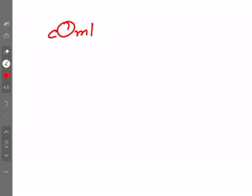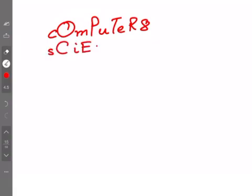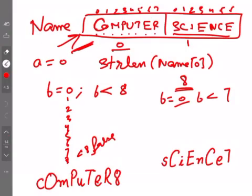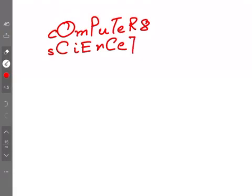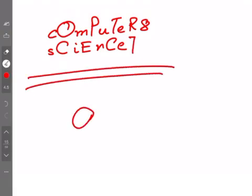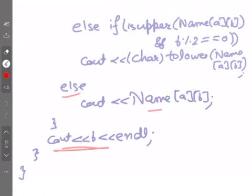So this is how the code works. The final output will be: on the first line 'cOmPuTeR8', and on the next line 'sCiEnCe7'. That is the output of the given code.